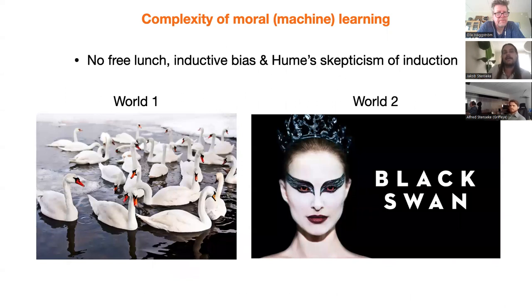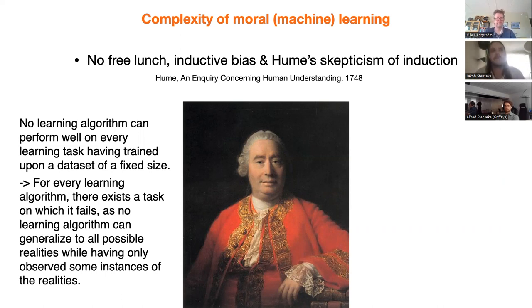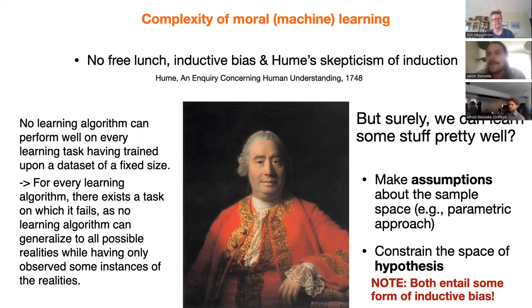In machine learning there's sampling complexity — the number of training samples needed to learn a target function — separate from training time complexity and runtime complexity. We can think of weak sample complexity (samples needed for a specific input-output distribution) and strong sample complexity (samples needed for any possible distribution). Unfortunately, there are no-free-lunch theorems in optimization, supervised learning, and all forms of machine learning: you can be really unlucky and be in a world with just white swans, never finding that black swans exist. As Hume noted, we only have inductive reasons to explain why induction works. No learning algorithm can perform well on every learning task when trained on a fixed-size dataset.